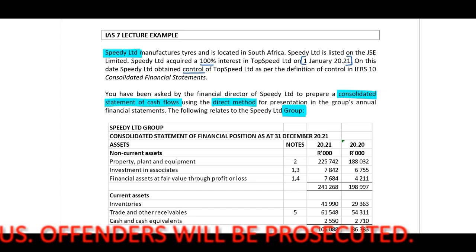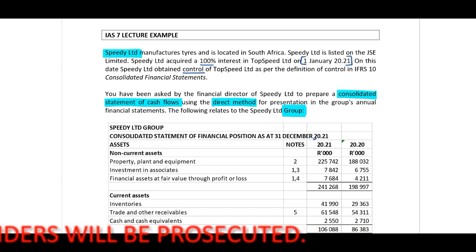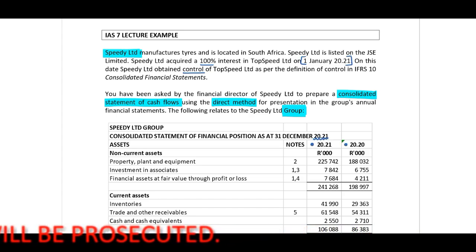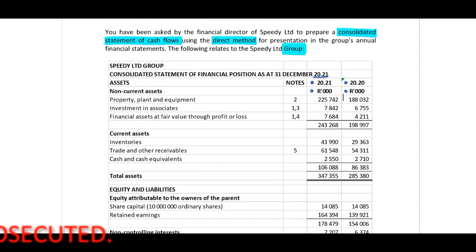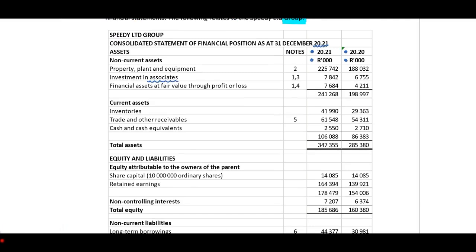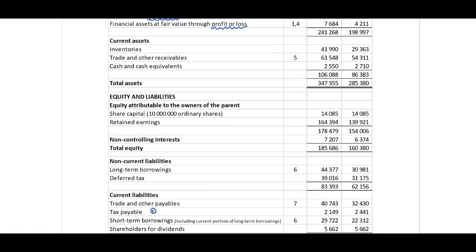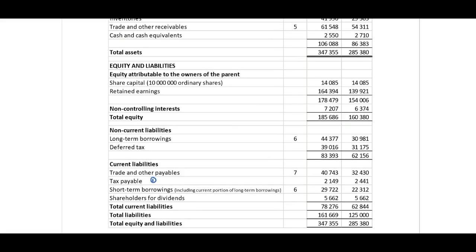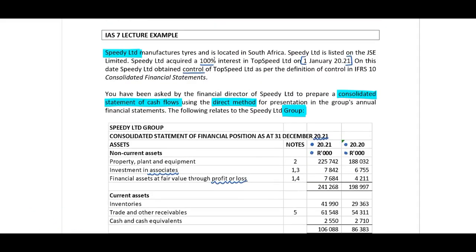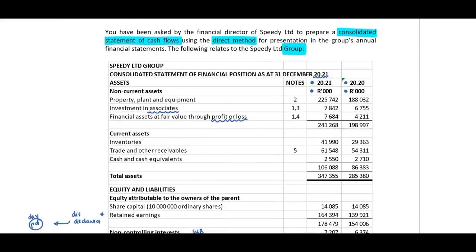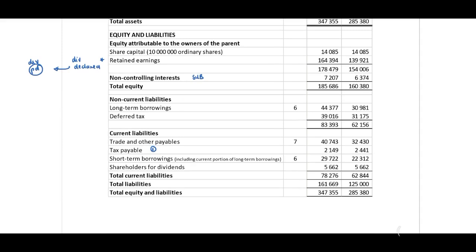The following relates to the Speedy Limited group. This is already a set of group statements. We have our consolidated statement of financial position as at 31 December 2021, providing 2021 and 2020 details in millions. I want to identify that there is an investment in associates account, financial assets at fair value through profit or loss, inventory, trade and other receivables, cash and cash equivalents, share capital, and retained earnings. This is 100% wholly owned — no NCI.